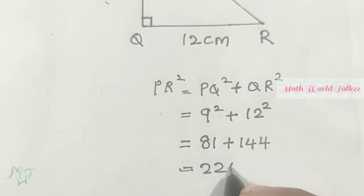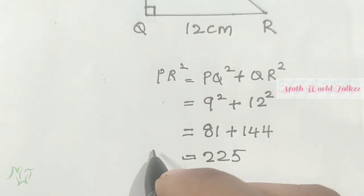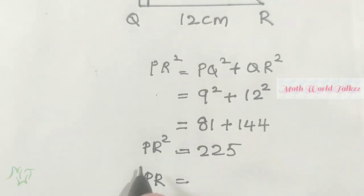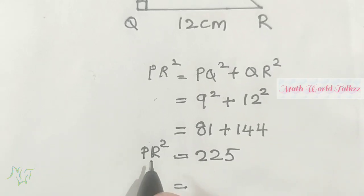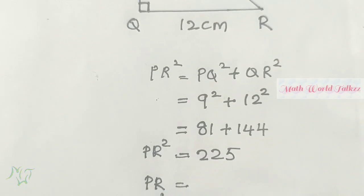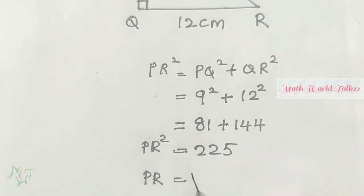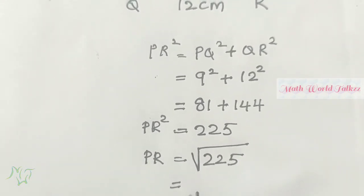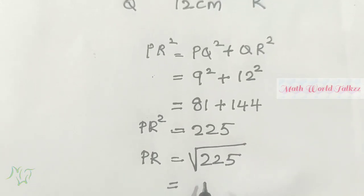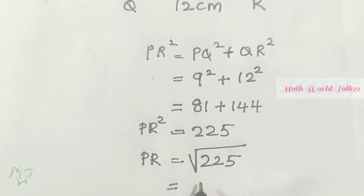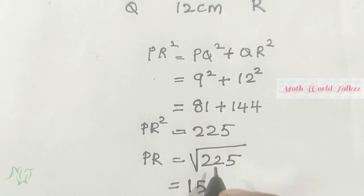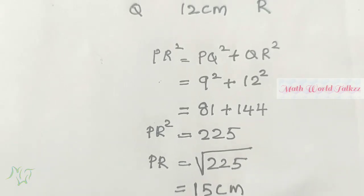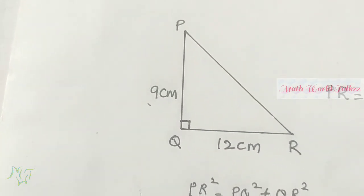9² is 81, plus 12² is 144. Adding these we get 225. So PR² = 225, and PR = √225. We can find the square root using the factorization method, or we know that 225 is the square of 15. So √225 = 15. Hence PR = 15 centimeters, which is the hypotenuse.